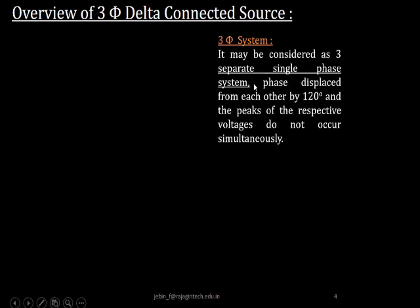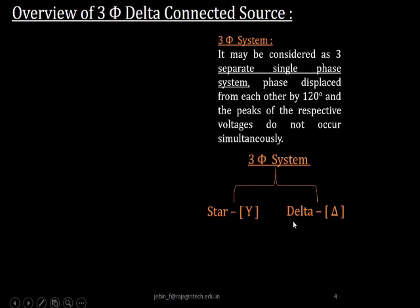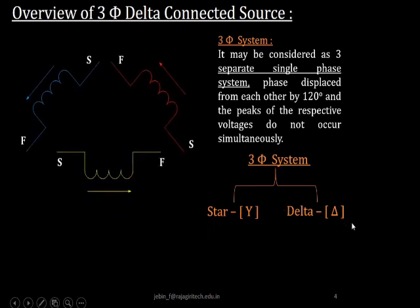Overview of a three-phase balanced delta connected source. Before we discuss delta connection, let us revise what a three-phase system is. A three-phase system may be considered as three separate single-phase systems, phase displaced from each other by 120 degrees, and the peaks of their respective voltages do not occur simultaneously. In case of a three-phase system, there are two possible ways of interconnection: star connection and delta connection. In today's lecture, we will be concentrating on delta connection. Let us consider three separate phase windings of an alternator.